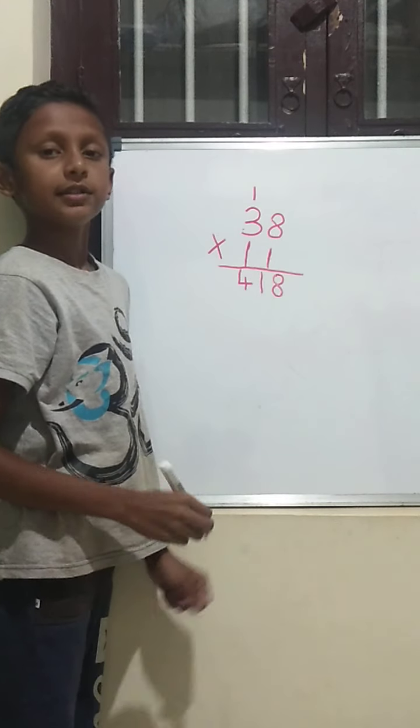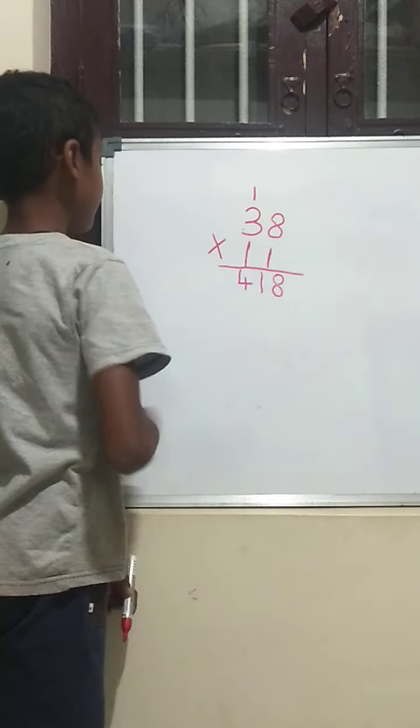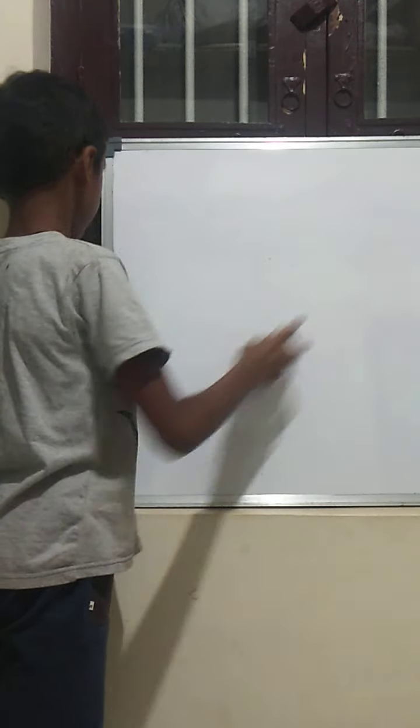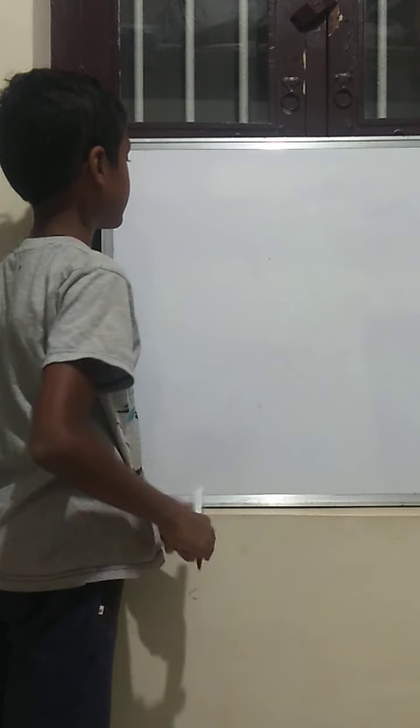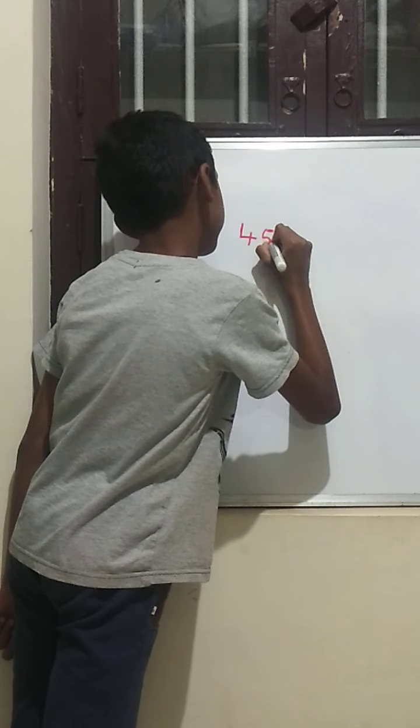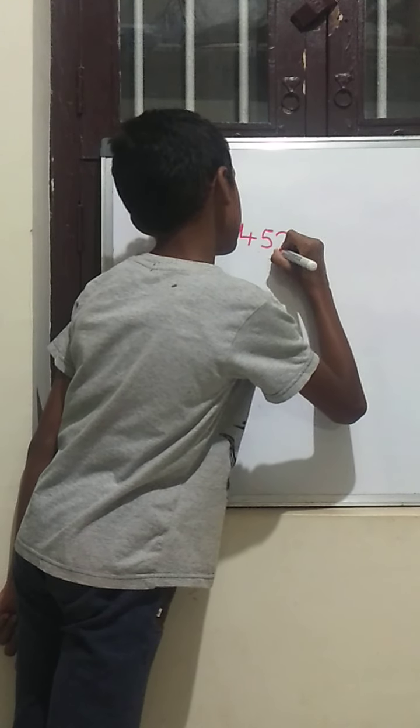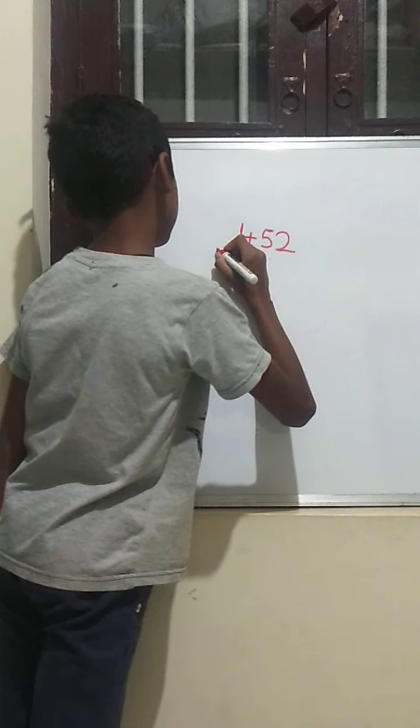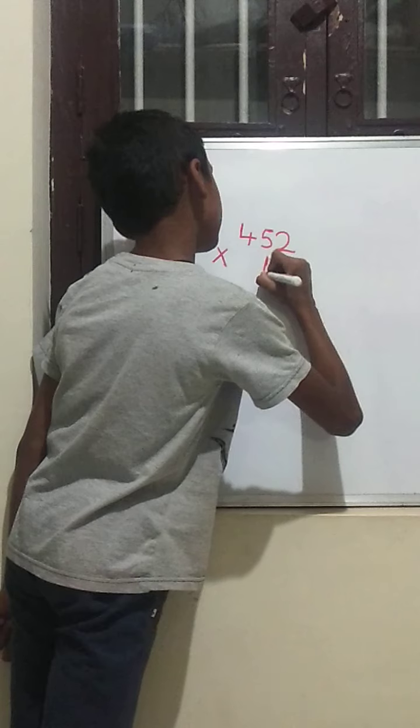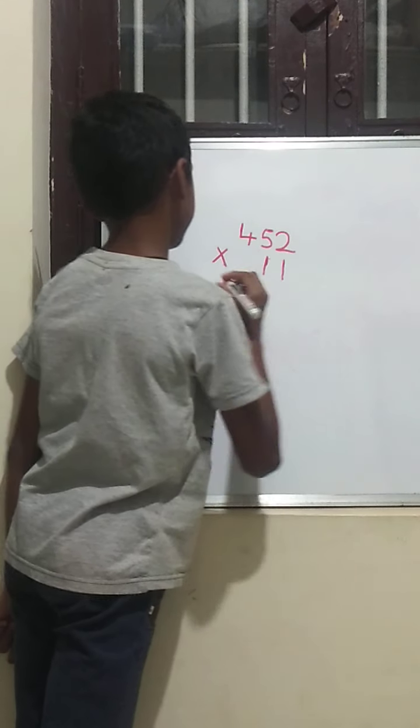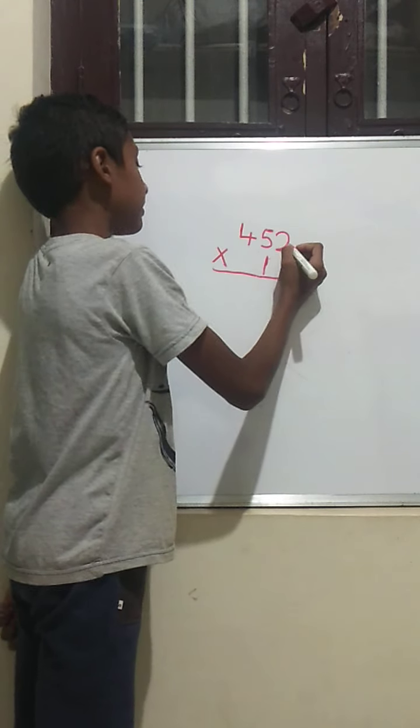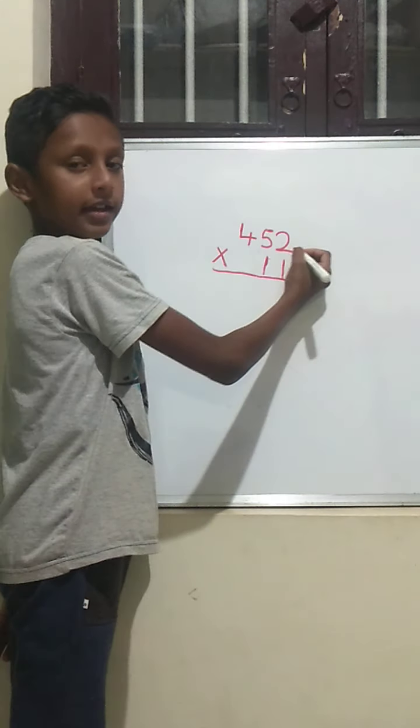Let's move on to 3 digit numbers. 480 multiplied by 11. 5 plus 4 is 11. First, we should write first digit as it is.